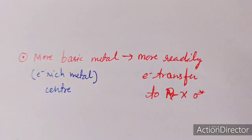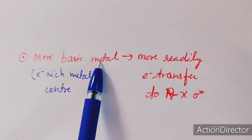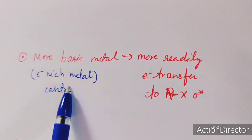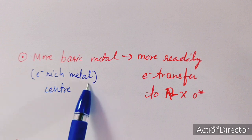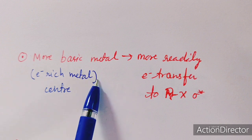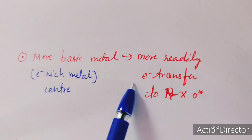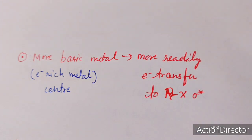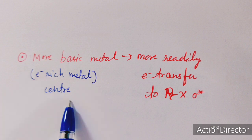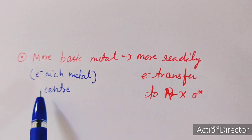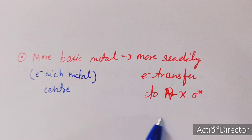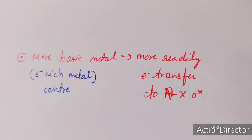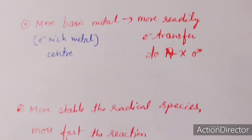The first factor is the metal: the metal should be electron-rich. If the metal is electron-rich, it can easily donate its electron to the R-X, transferring the electron to the R-X sigma-star orbital. This is the requirement for the non-chain type of radical mechanism, since electron transfer occurs from the metal to the R-X sigma bond.